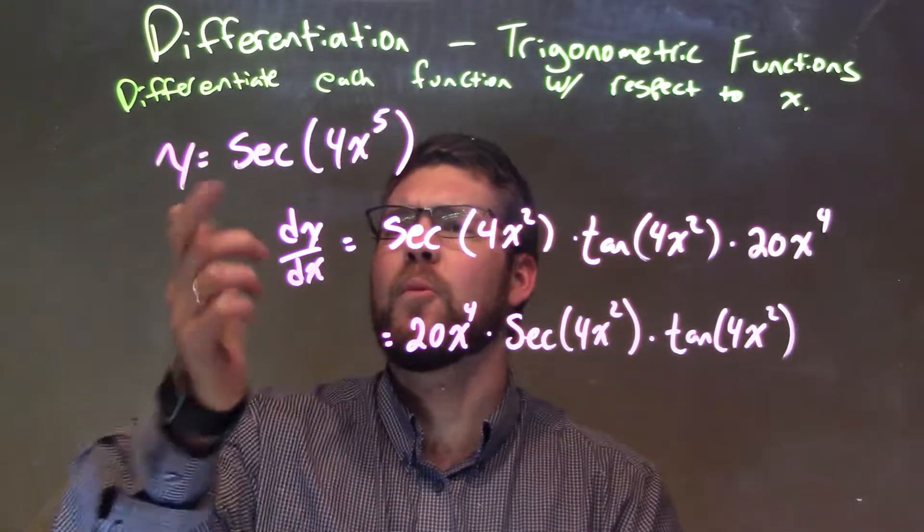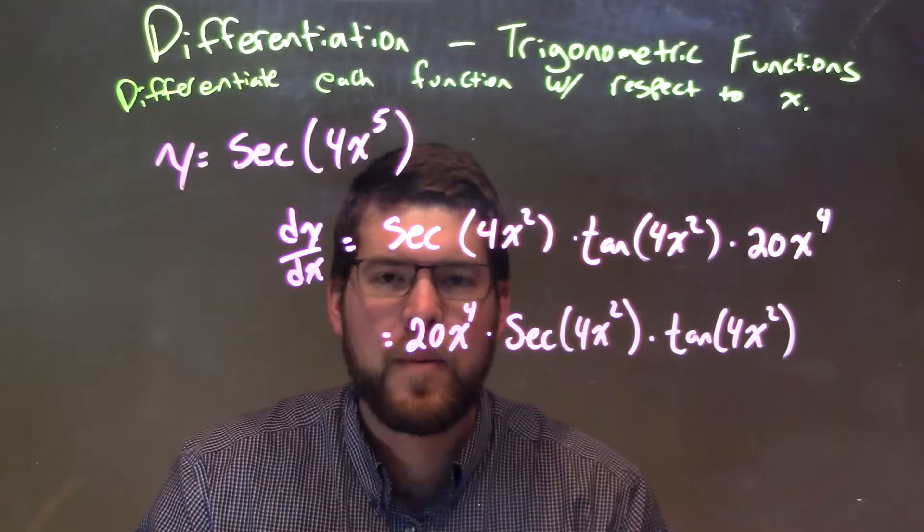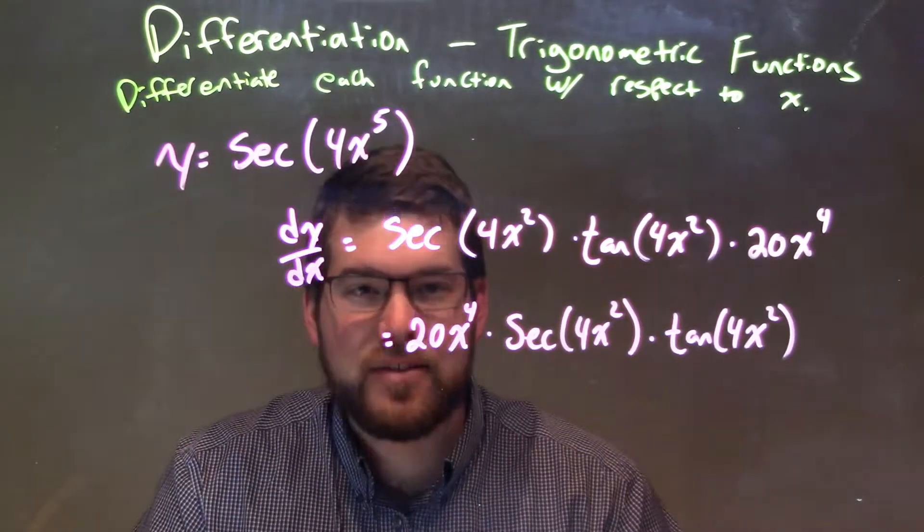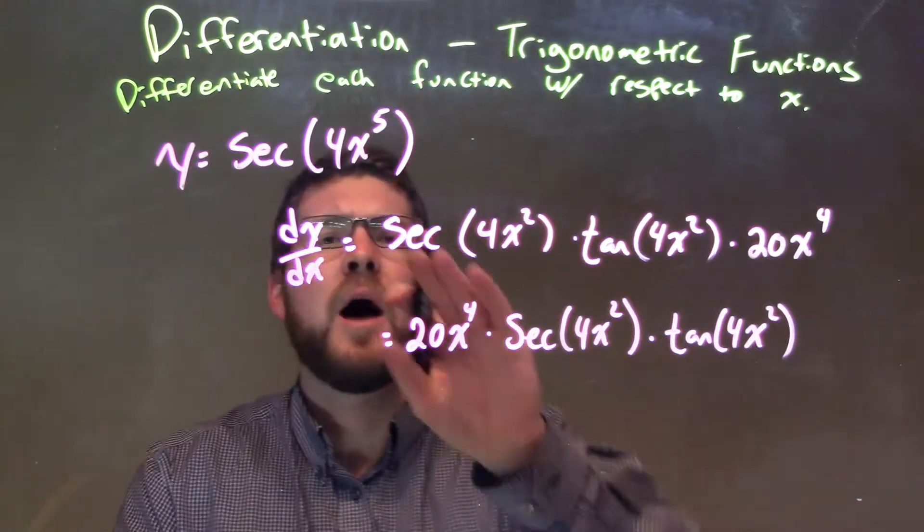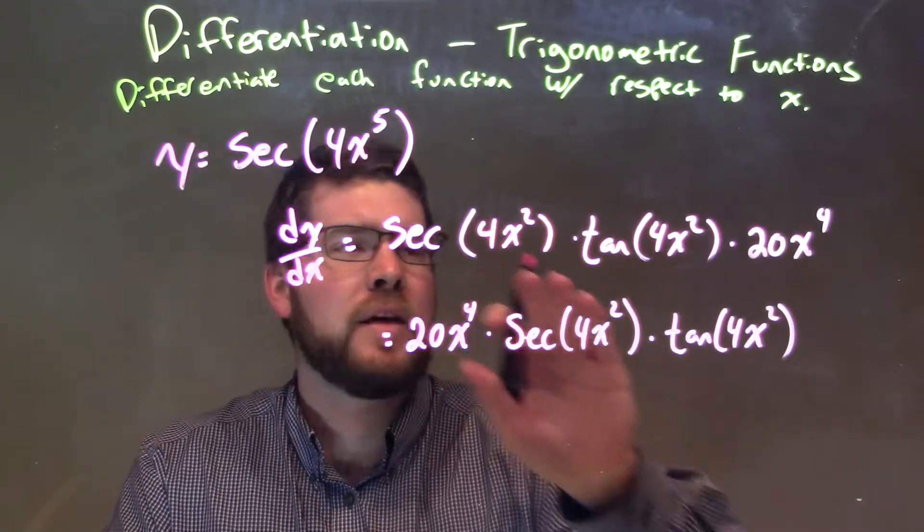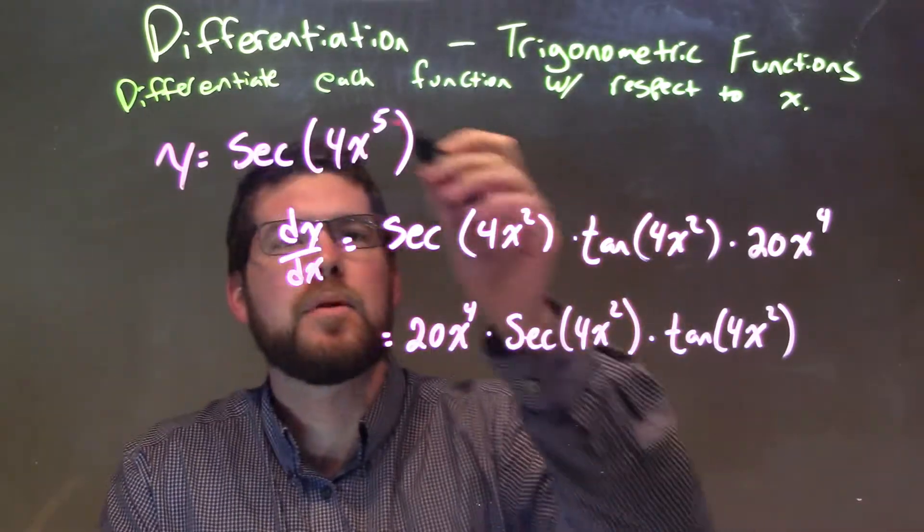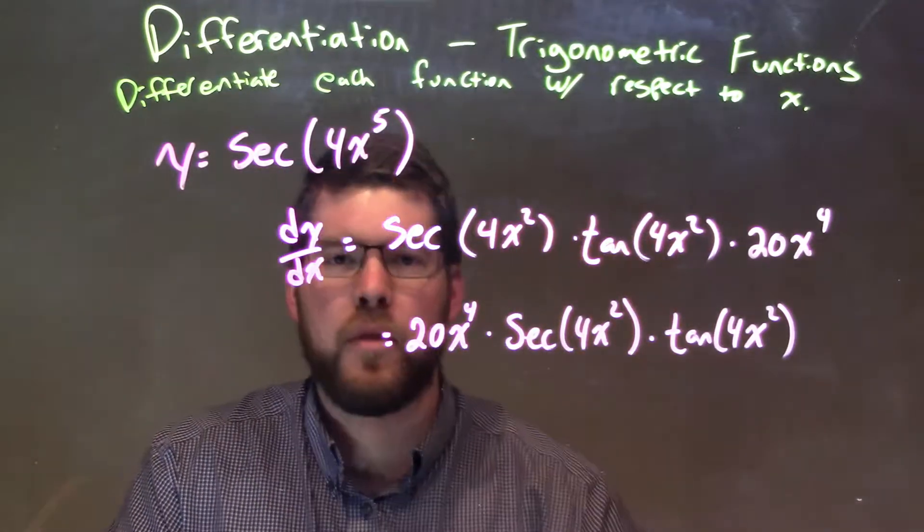So let's recap. We're given y equals the secant of 4x to the 5th power. Well, I know the derivative of secant, the secant of x, is secant x tangent of x. So I'm going to rewrite this to have secant of a space times tangent of some space, some parentheses.